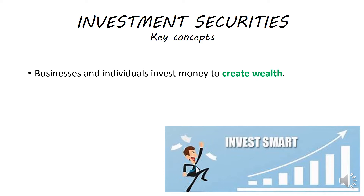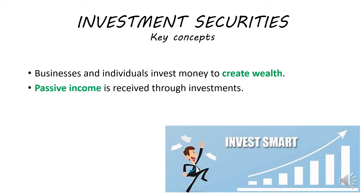Through investing money and having your money grow, that can create wealth, because it enables you to buy more stuff sometime in the future. So when we make investments, it is called passive income — that return on the investment that you receive. For example, if you deposit your money in the bank and you earn interest, it is passive income. It's not income you work for. You are not working and slaving away for that salary; it is income that you receive through basically doing nothing.